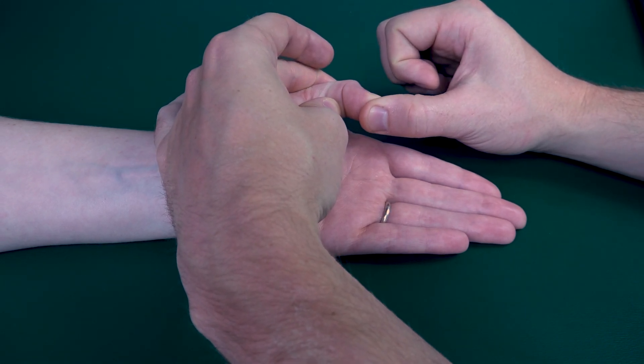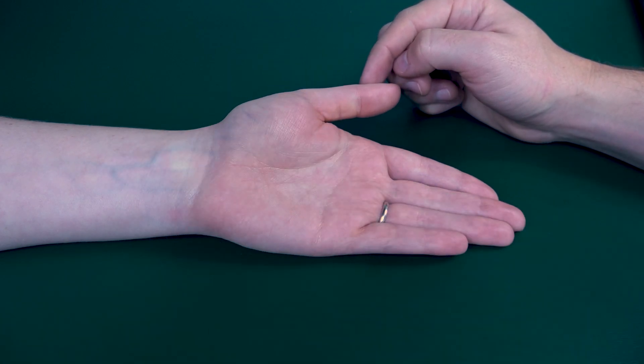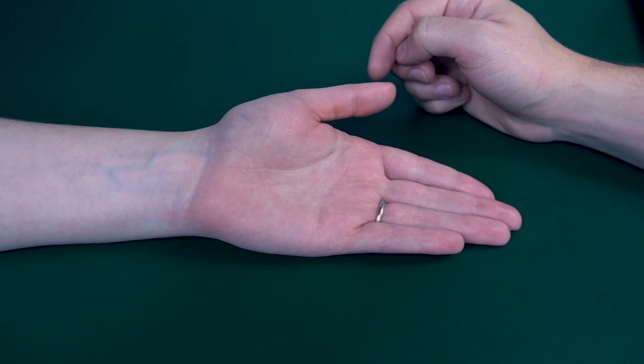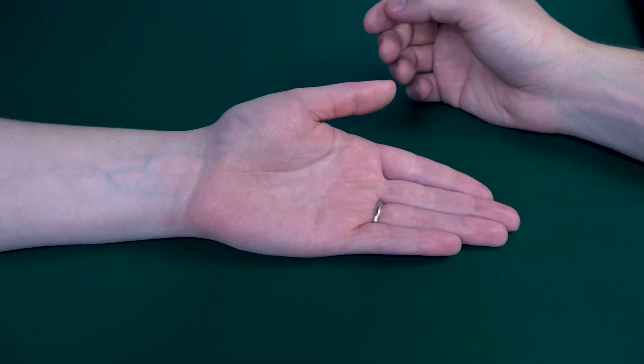Three, two, one. If she could not bring her thumb into flexion while in this position, then you can have her in a gravity eliminated position.